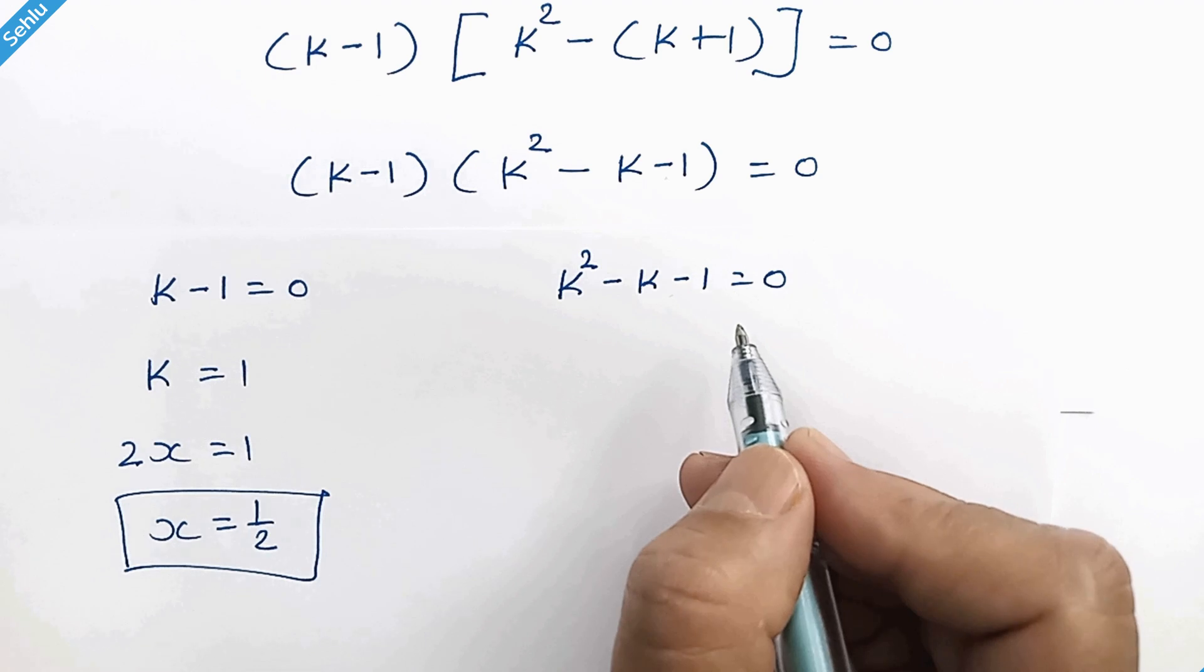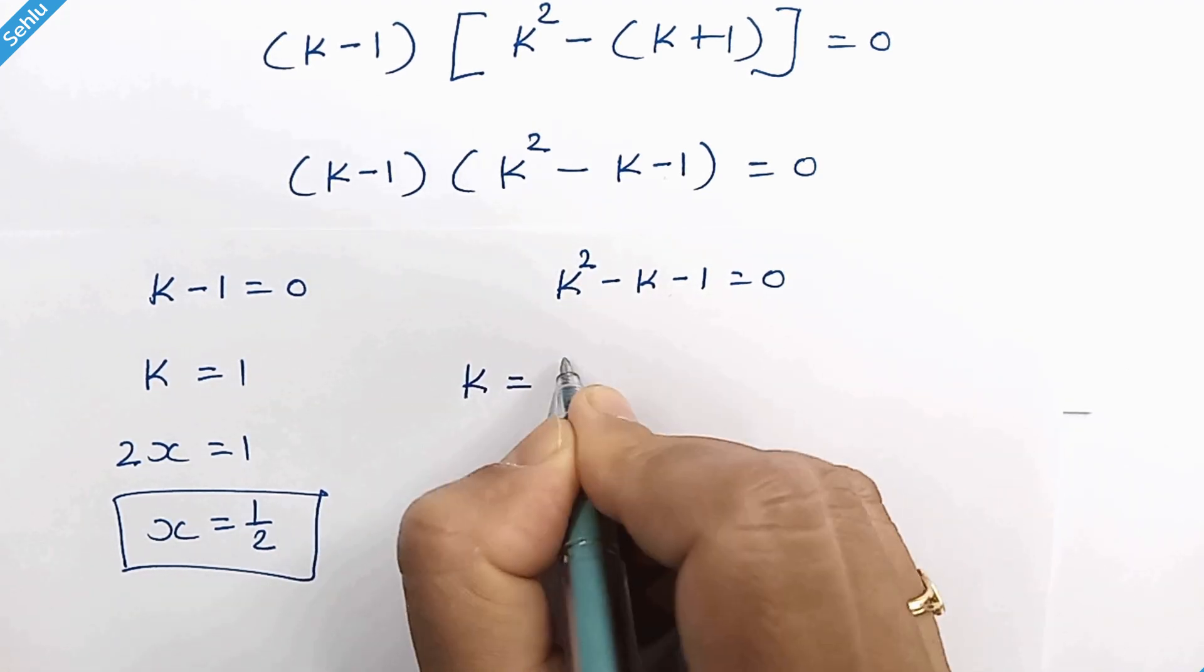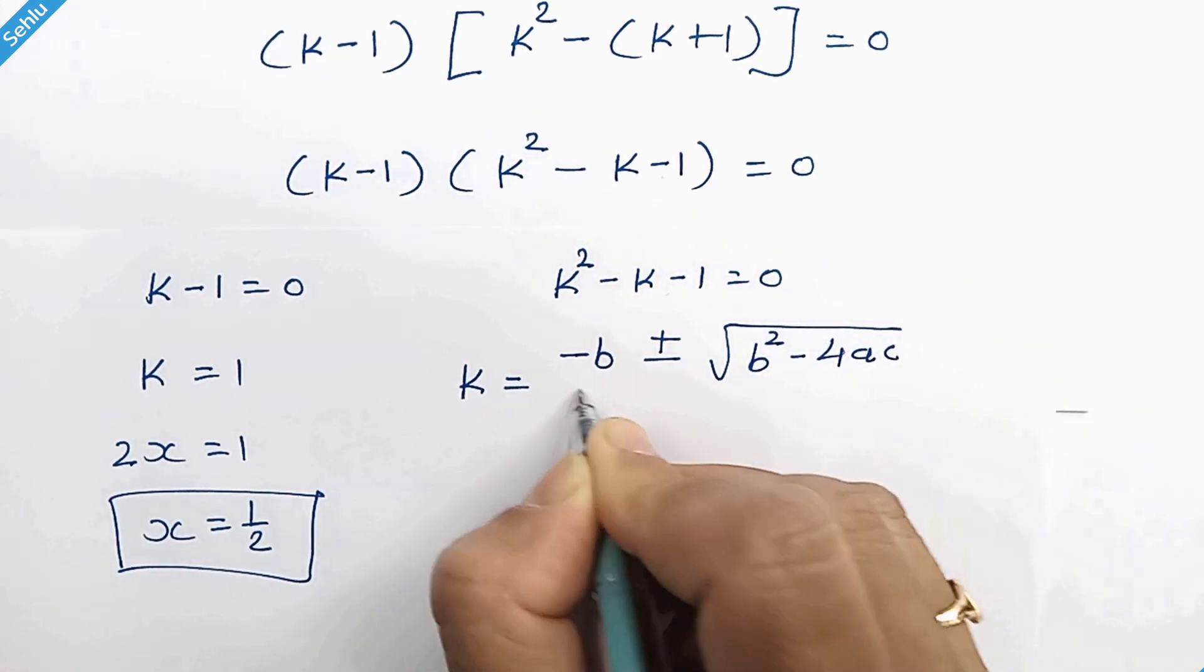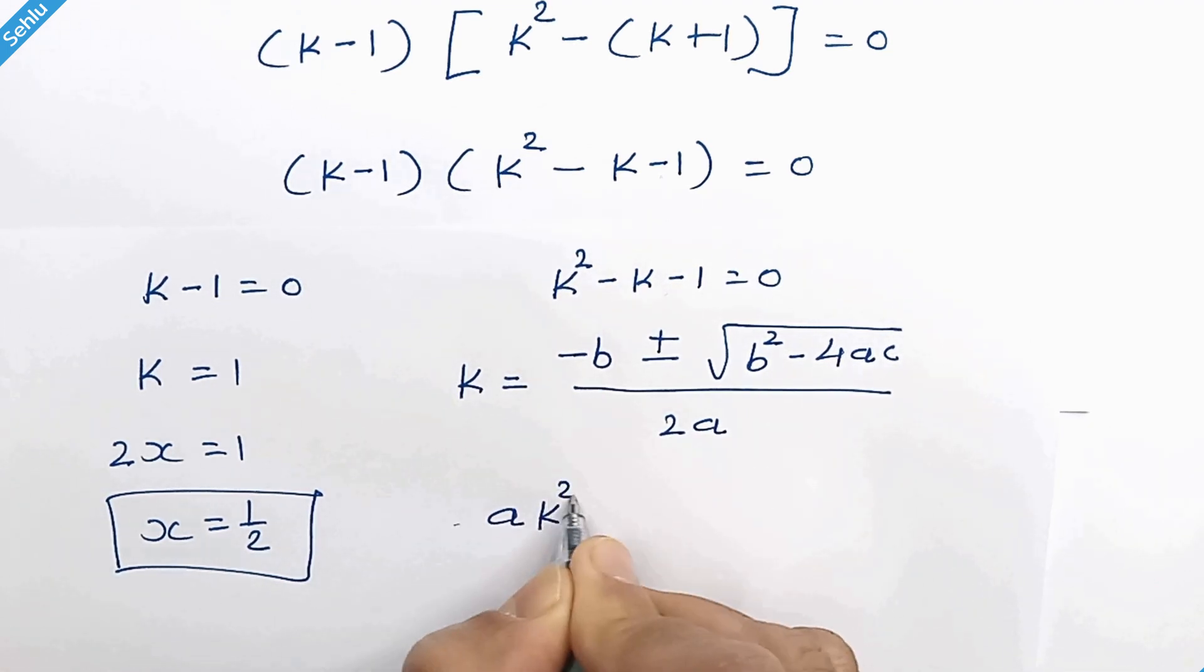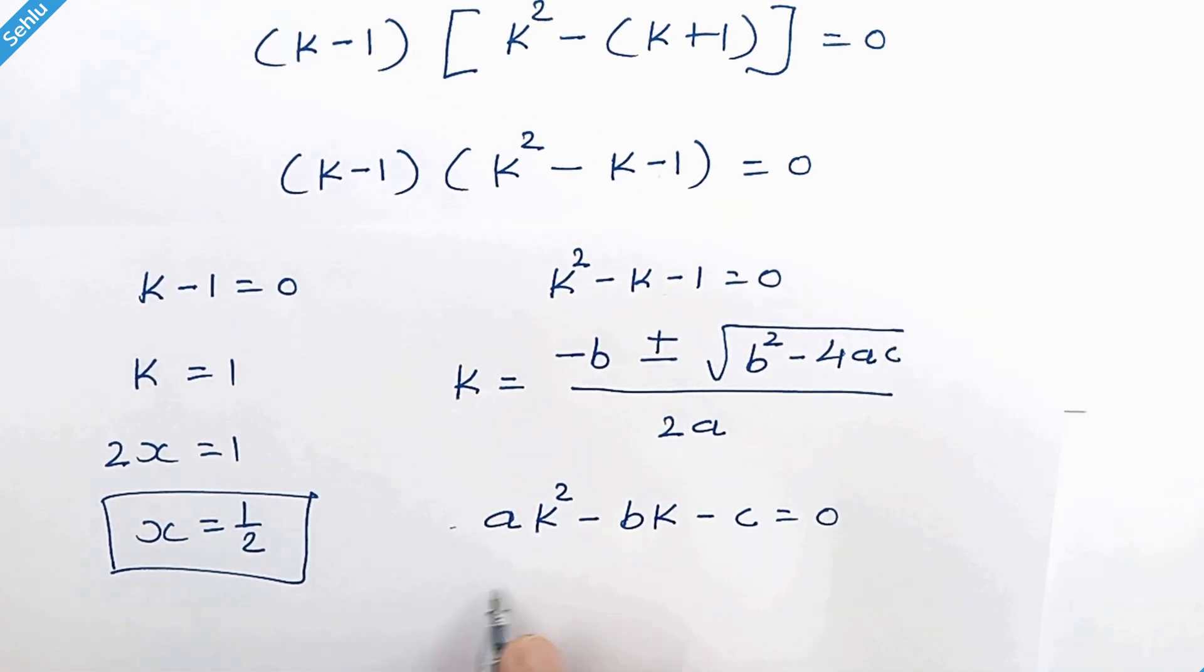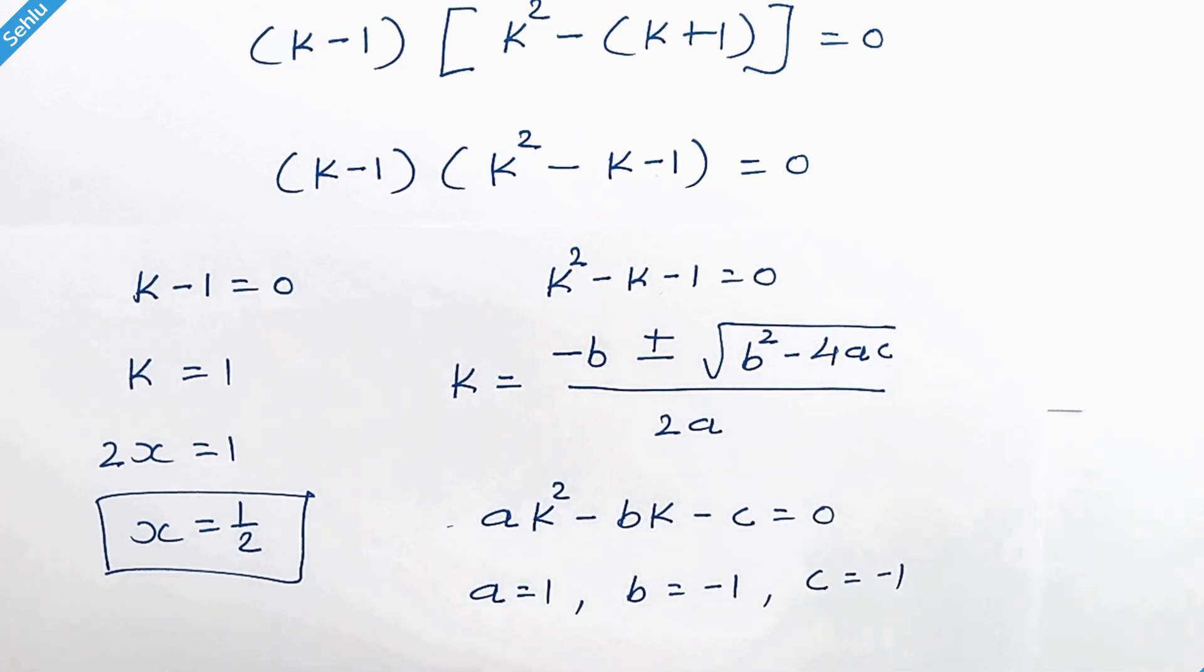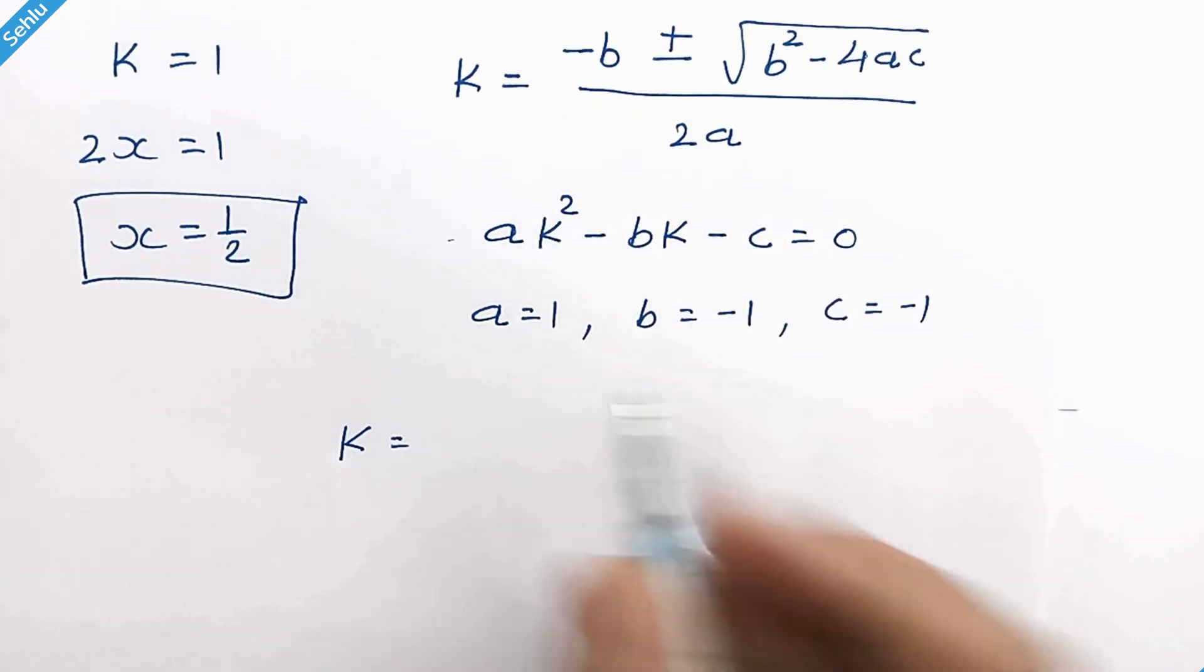This is a quadratic equation, and if we apply the standard quadratic formula, k is equal to negative b plus or minus square root of b square minus 4ac over 2a. So here we have ak square minus bk minus c is equal to 0, so here a is equal to 1, b is negative 1, and c is negative 1. Put all these values in the formula.